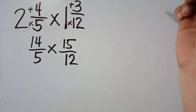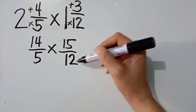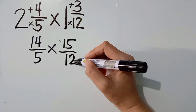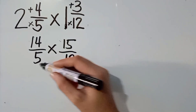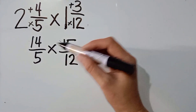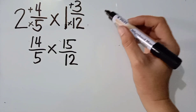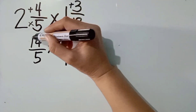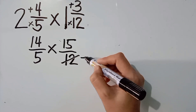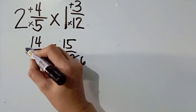Ngayon, our next step is we are going to use cancellation if there is common factor among the numbers here. Vertically or diagonally. Ang 15 at saka 12 po ba may common factor? Yes po, meron. How about 14 and 15 may common factor? Wala po. How about diagonally? 5 at 15 may common factor? Yes po. 14 at 12 din po may common factor. So, let us divide. Diagonally tayo. 14 at 12 may common factor sila na 2. So, let us divide them. 12 divided by 2, the answer is 6. 14 divided by 2, the answer is 7.